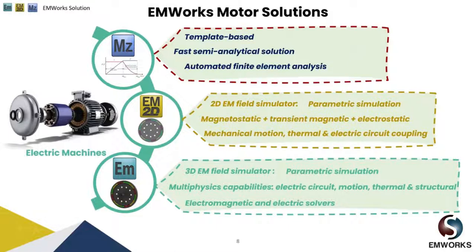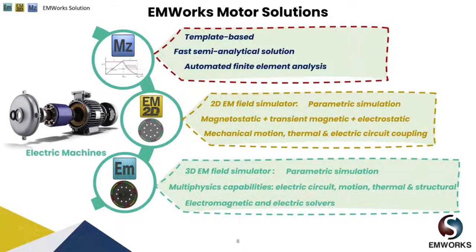Finally, we have the third tool which is EMS. It enables users to do both electric and magnetic simulations using the complete 3D geometry. EMS is a true multi-physics software that enables users to couple the magnetic and electric design to circuit, motion, thermal, and structural analysis on the same model in a hassle-free integrated environment. Today for our analysis, we are going to use the second tool, EMWorks 2D.